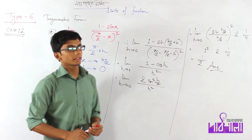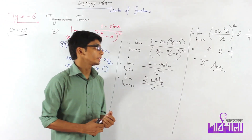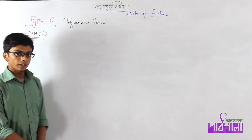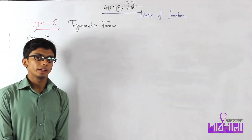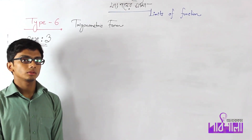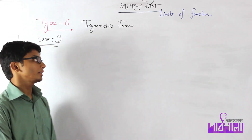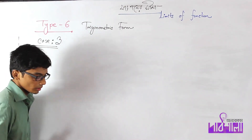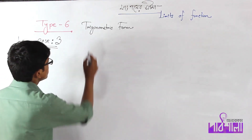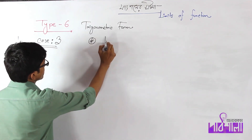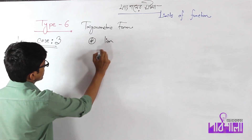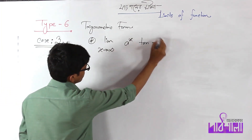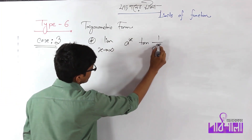We have to practice this one. We have to see Case 3. This type is not enough — we have to ask the admission question. We will try to get the answer and practice this trigonometry. Now the problem is: limit x tends to infinity of e to the power x times tan(1 by e to the power x).